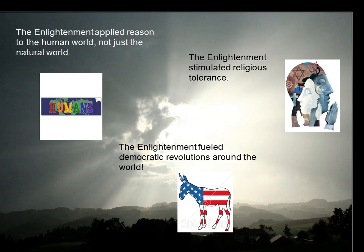As you can see here, the Enlightenment had a lot to do with government, but it also changed different parts of the world. All these changes are happening at one time — it's very chaotic in some places, but it's an evolution into something even better at the other end. The Enlightenment applied reason not just to the natural world, but to humanity and human feelings and emotions.